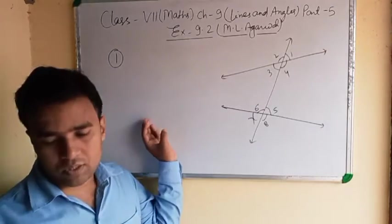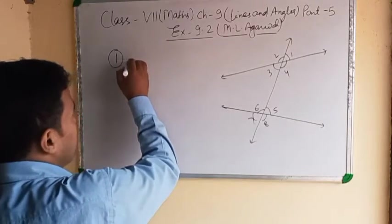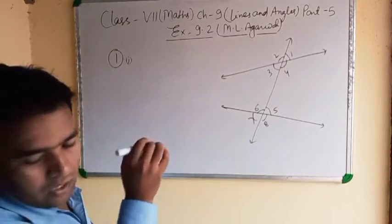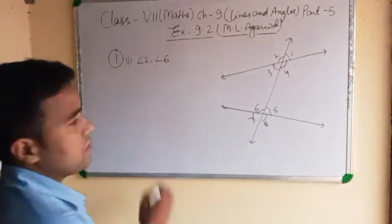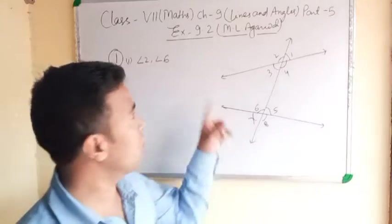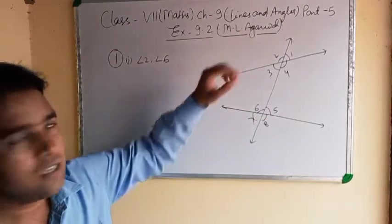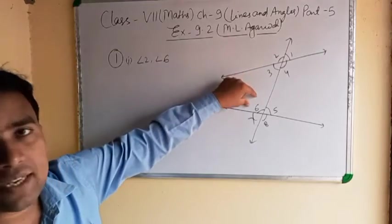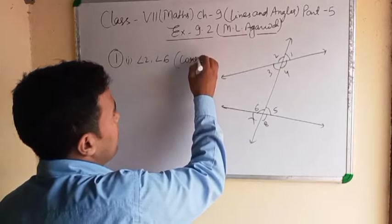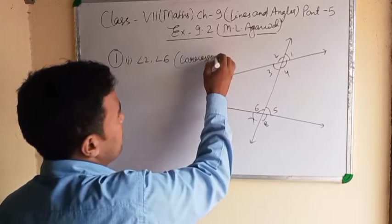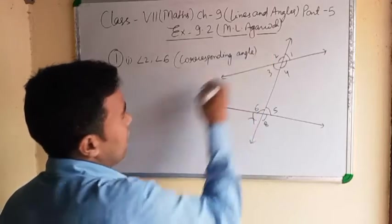In question number 1, six parts are given. The first part is angle 2 and angle 6. Angle 2 and angle 6 — it is a corresponding angle. We will write: corresponding angle.